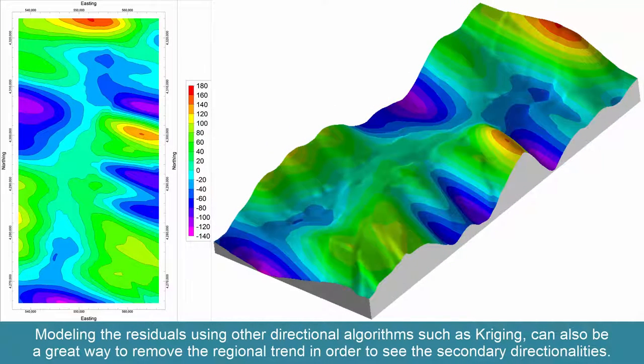Modeling the residuals using other directional algorithms, such as Kriging, can also be a great way to remove the regional trend in order to see the secondary directionalities.